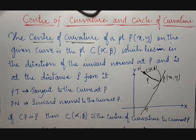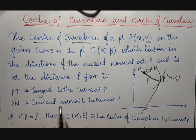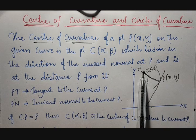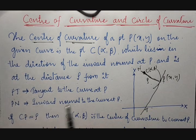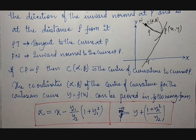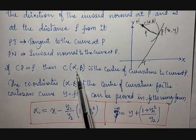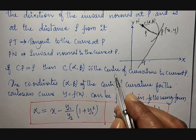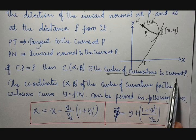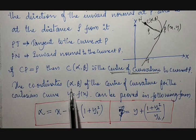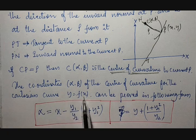If PT is the tangent and PN is the inward normal to the curve, then C will be the point on the inward normal. The distance from C to P is equal to ρ, which is the radius of curvature. Therefore, C(α, β) is the center of curvature to the curve at P. The coordinates α and β of the center of curvature for the Cartesian form y = f(x) can be proved in these forms.